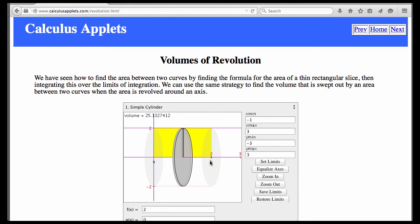So imagine having infinitely many of these discs inside the cylinder, and if you found the volume of one individual disc and added them all up, then you could approximate the volume of the solid that is created.